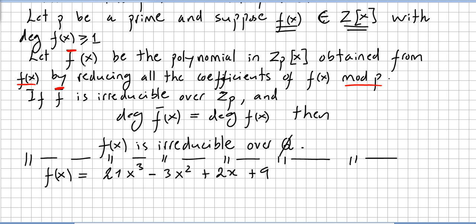Let f̄(x) be the polynomial in Z_p. So let us pick for instance the ring of Z₂[x]. So what is f̄ going to be in Z₂? x³ + x² + 1, right? Because 21 is 1, minus 3 that's 1, 2 is 0, and 9 is 1.